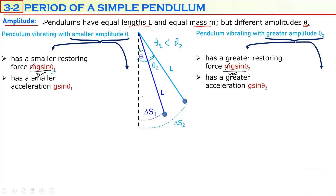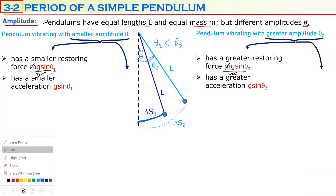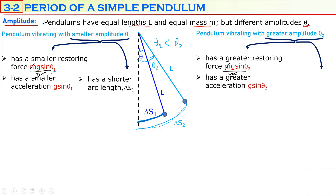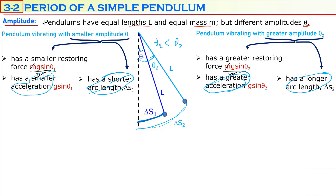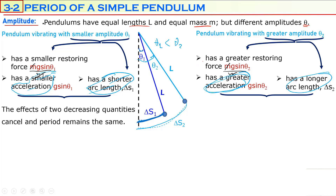Now let's check the arc lengths. The pendulum vibrating with a smaller amplitude, theta-1, will have a shorter arc length, delta-s1, which is shorter than delta-s2. The pendulum with greater amplitude has a longer arc length, delta-s2. So the first bob travels a shorter distance with a smaller acceleration, while the second bob travels a longer distance with a greater acceleration.